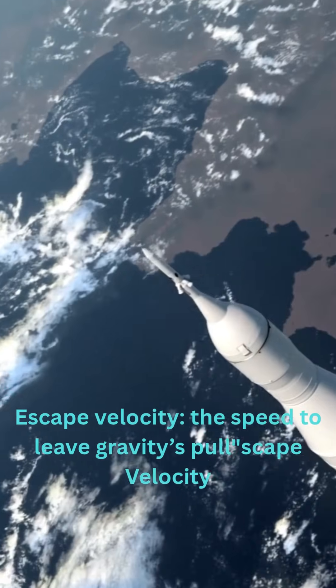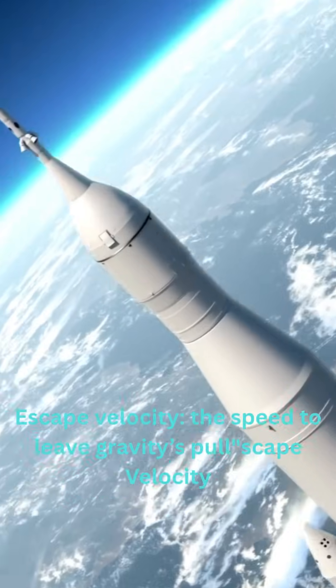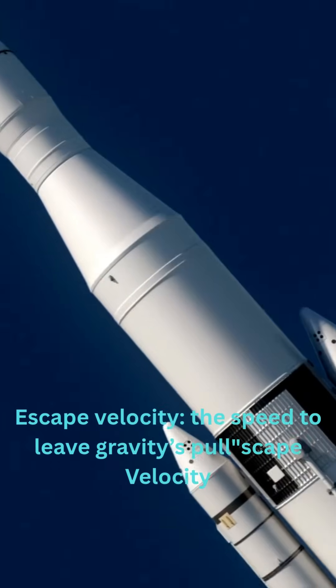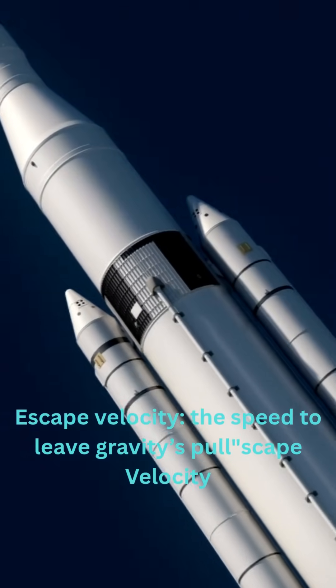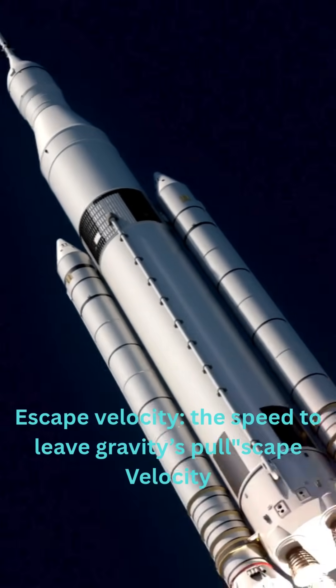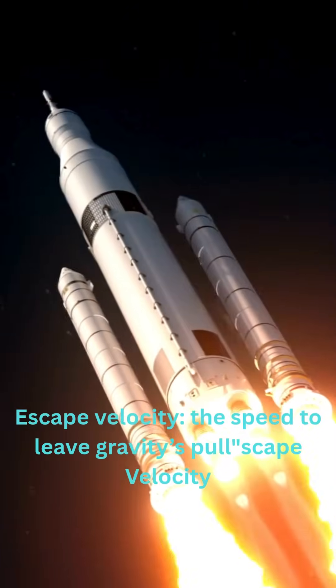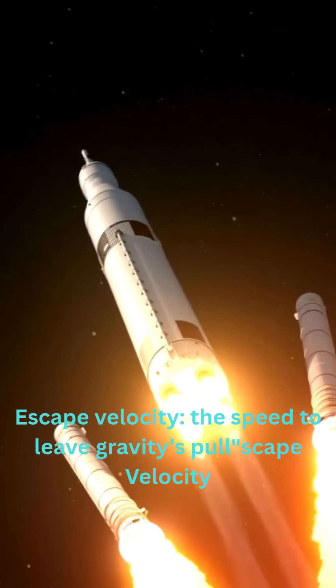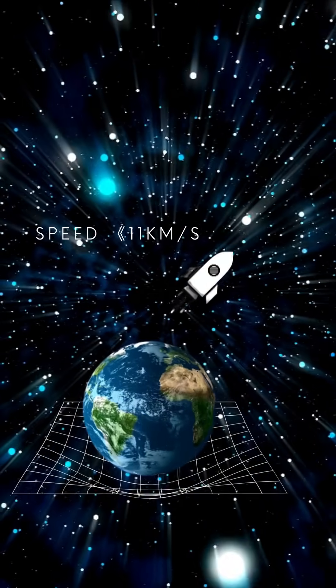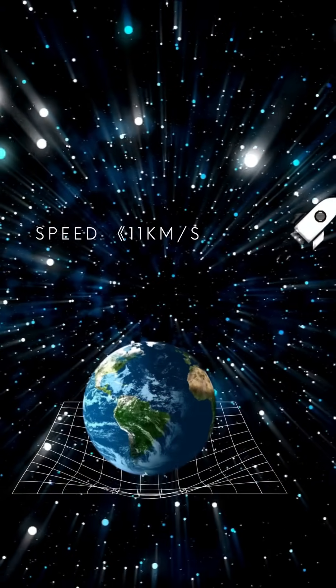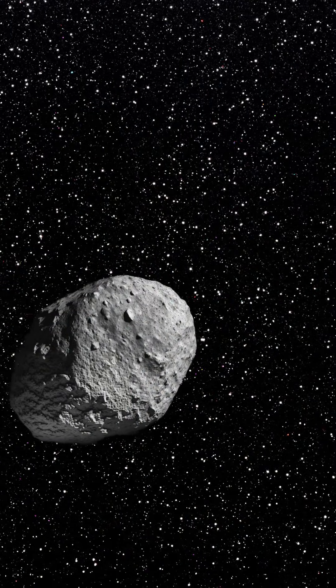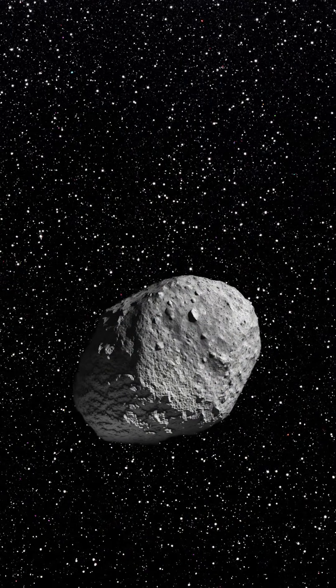To escape any celestial object, you need to overcome its escape velocity, the speed you must reach to break free from its gravity. For Earth, that's over 11 kilometers per second. But for small asteroids, it could be just a few centimeters per second.